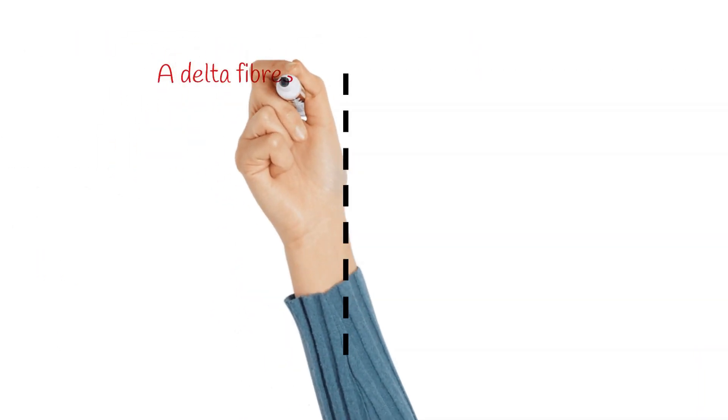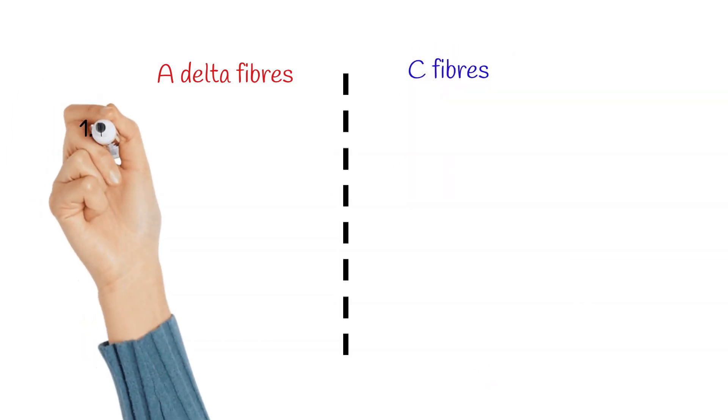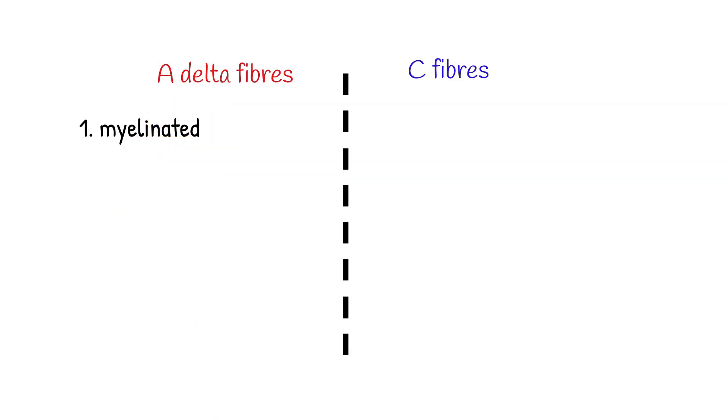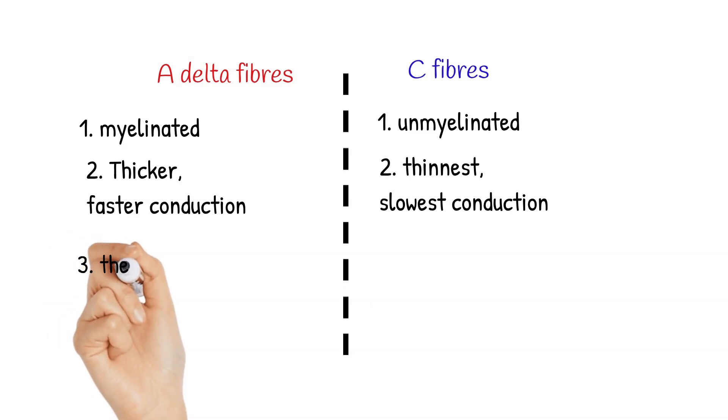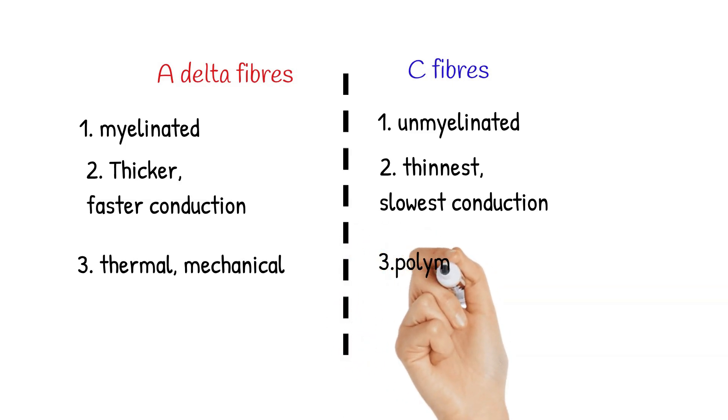There are some differences between the A-delta fibers and the C fibers. The A-delta fibers are myelinated, whereas the C fibers are unmyelinated. A-delta fibers are thicker and have a faster rate of conduction, whereas C fibers are thin and have the slowest rate of conduction. The A-delta fibers respond to thermal and mechanical stimuli, whereas C fibers are polymodal. That means it responds to thermal, mechanical and chemical stimuli. There are some silent receptors in the C fibers also. These receptors are activated only at the time of inflammation. The pain carried by the A-delta fibers is well localized, whereas the C fibers carry pain which is poorly localized.